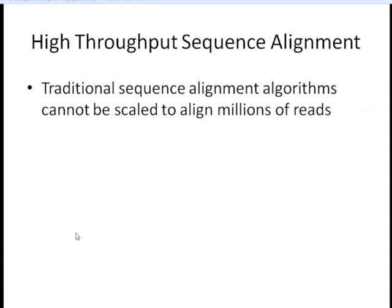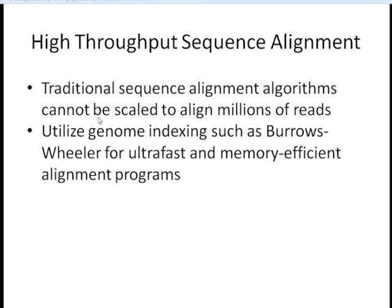Now that we've checked the quality of our reads, we can move on to aligning them. The traditional sequence alignment algorithms, particularly the ones discussed in the first part of this webinar, cannot be scaled to align millions of reads — they just weren't designed for that. Newer programs have been created for short reads that first index the genome using indexes such as the Burrows-Wheeler transform to allow for ultra-fast, memory-efficient alignment of reads to our reference.